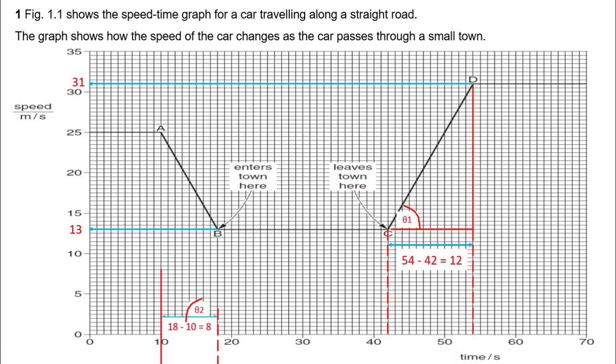Now, let's find how much time was taken for this velocity change. Here you can see initial time is 42 seconds and final time is 54 seconds. So the change of time is 12 seconds. As you can see, the velocity change during 12 seconds is 18 meters per second.